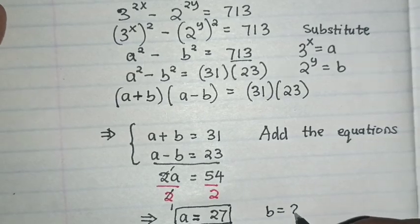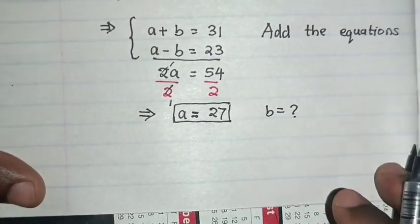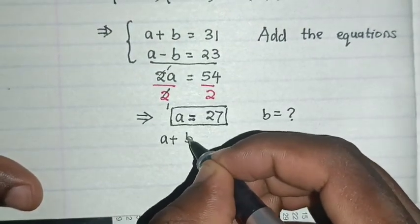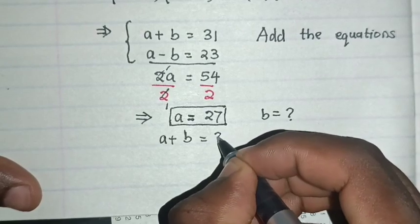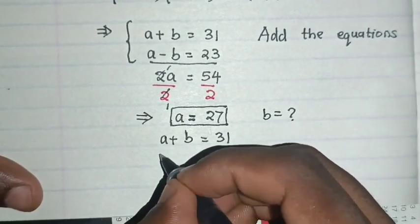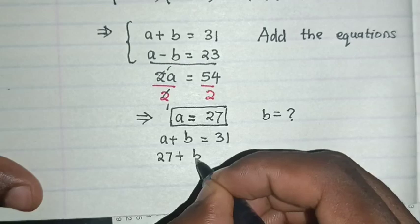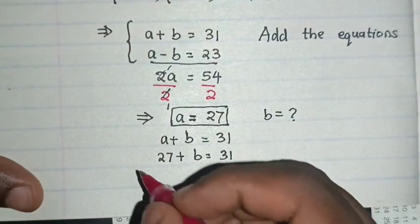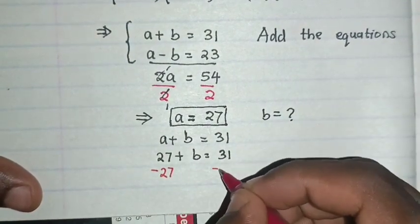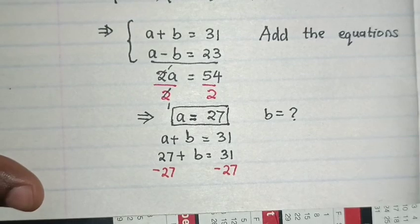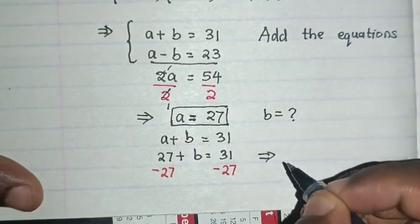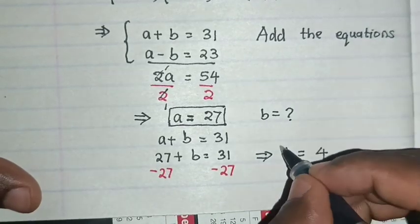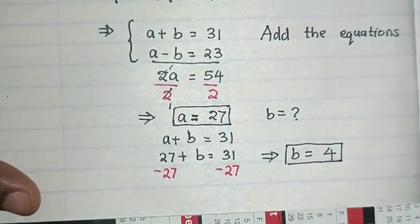So then from a = 27, we find what is b. We substitute from one of the equations, which is a + b = 31. So 27 + b = 31. So 27 to the other side, 27 minus 27 is 0, 31 minus 27 is 4. So b = 4.